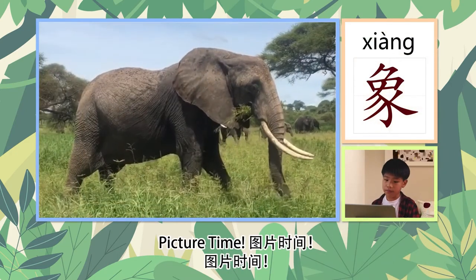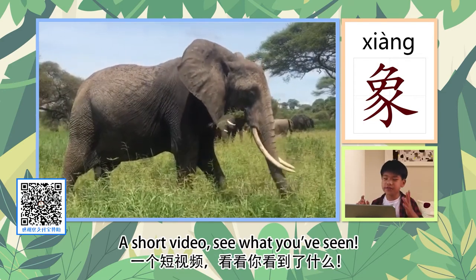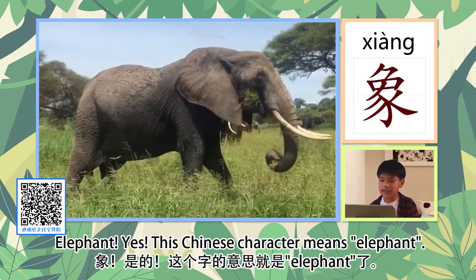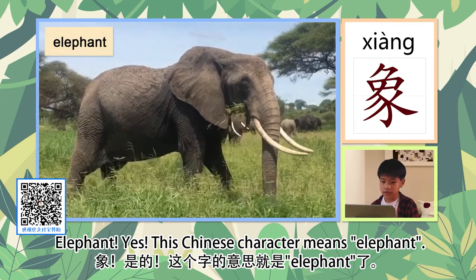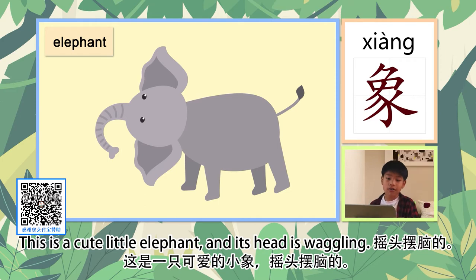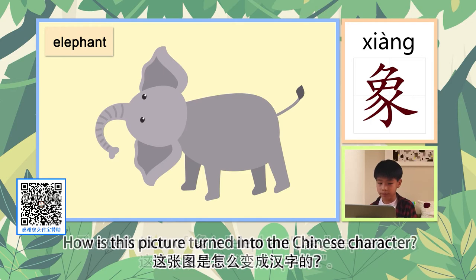Picture time! A short video — see what you see. Elephant! Yes, this Chinese character means elephant. Let's see another picture. This is a cute little elephant and its head is waggling. The definition of 象 is elephant.